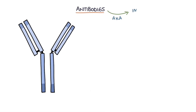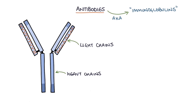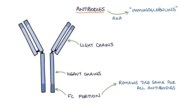So let's talk about antibodies. Antibodies are also known as immunoglobulins, and antibodies are complex molecules made up of two heavy chains and two light chains arranged in a Y shape. The bottom of the Y contains something called the FC portion, and this remains the same amongst all antibodies. This is the portion used for binding to the cells of the immune system so that they can recognize the antibody and carry out their function.